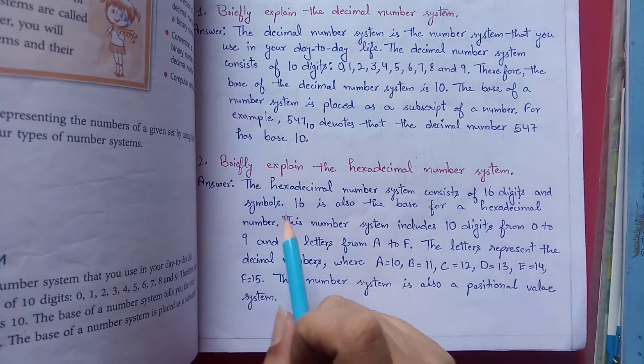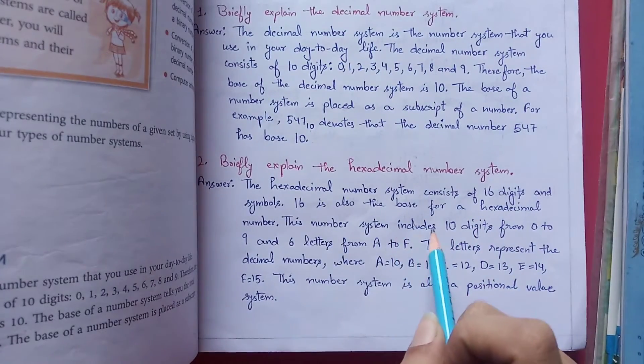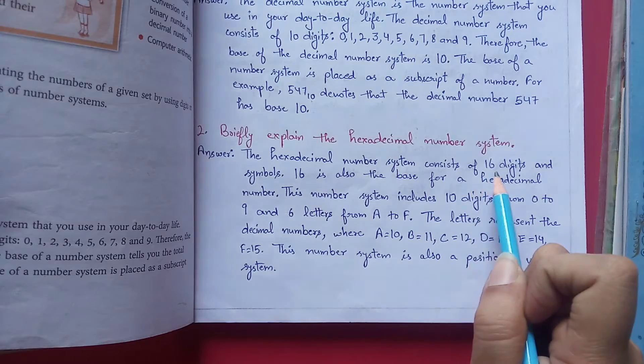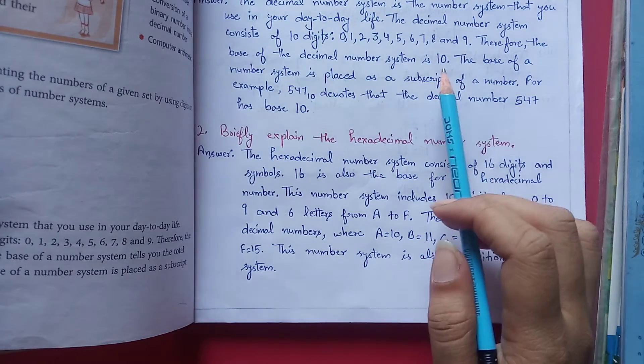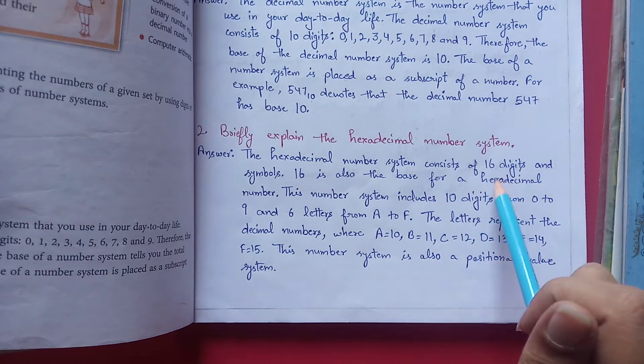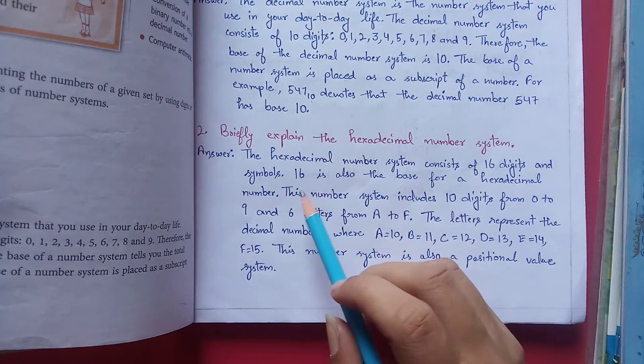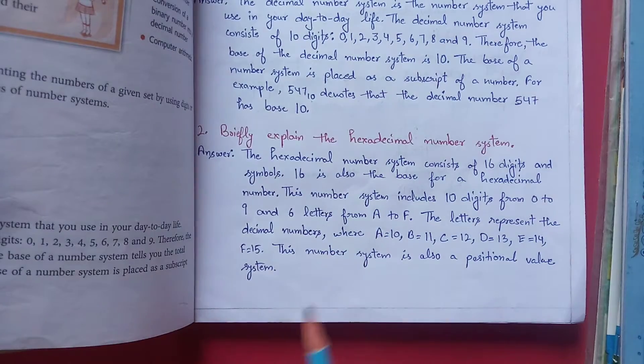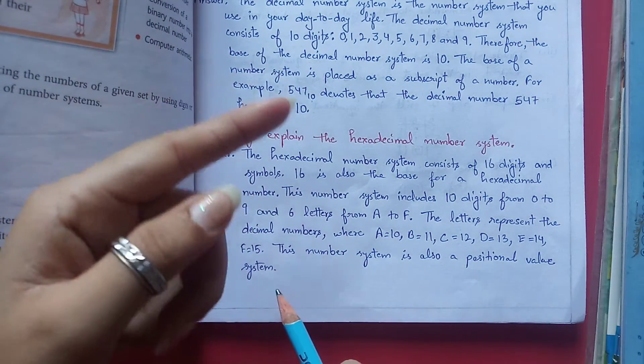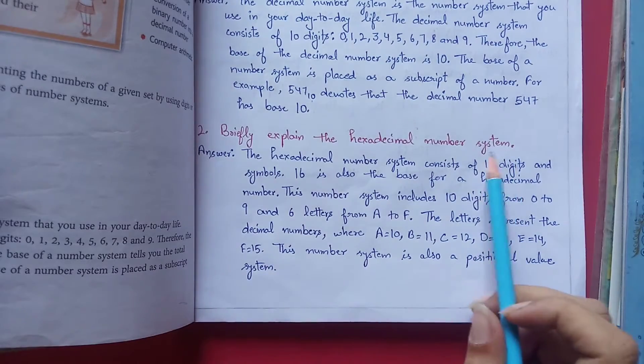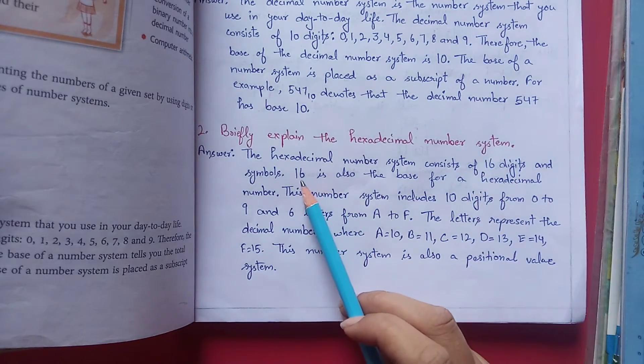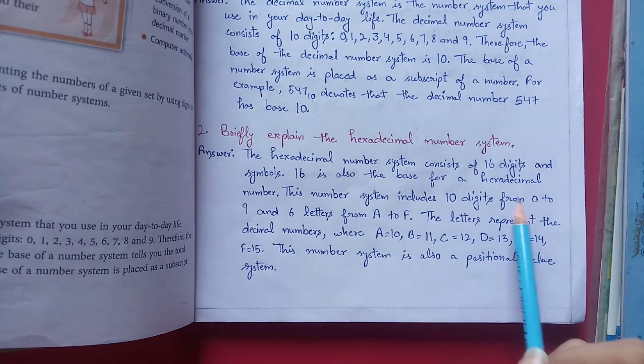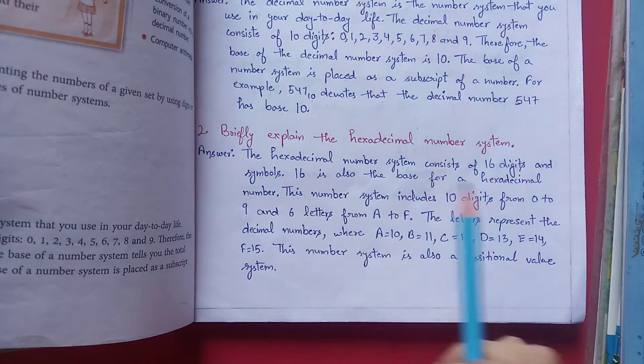Next is briefly explain the hexadecimal number system. Hexadecimal number system ko explain karna hai. The hexadecimal number system consists of 16 digits. Decimal 10 se consist hota tha, lekin ye 16 digits se consist hota hai. 16 is also the base for hexadecimal. This number system includes 10 digits from 0 to 9.